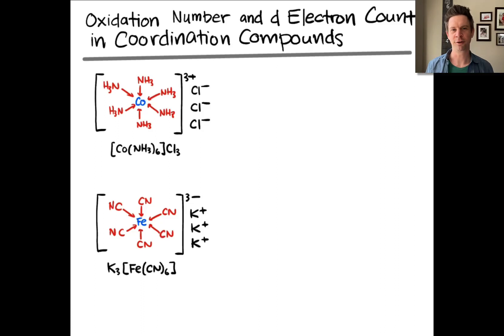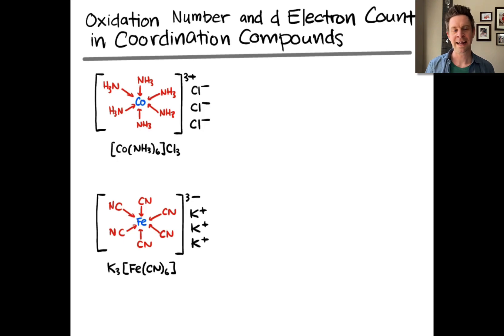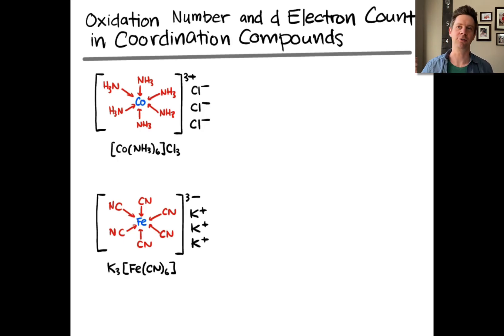Here we're going to dig a little deeper into the structures of coordination complexes by learning how to determine the oxidation number of the metal center and the count of d electrons at the metal center in a given coordination compound or complex, which is a simpler version of the compound since we don't need to worry about counter ions.